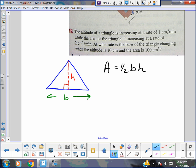And it says the altitude is increasing at a rate. That means dh/dt is getting bigger, right? So it's positive - positive 1 centimeter per minute. And it says what? The area is increasing, which is also positive at 2 centimeters per minute.